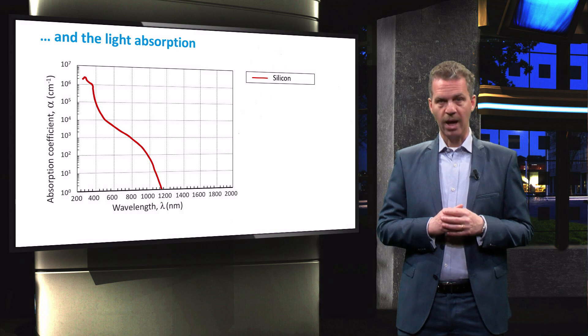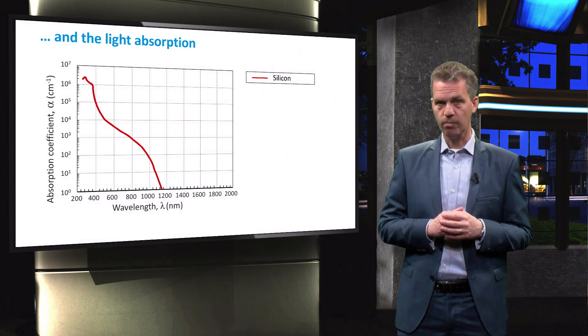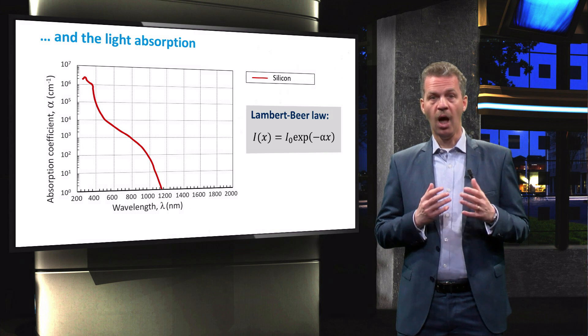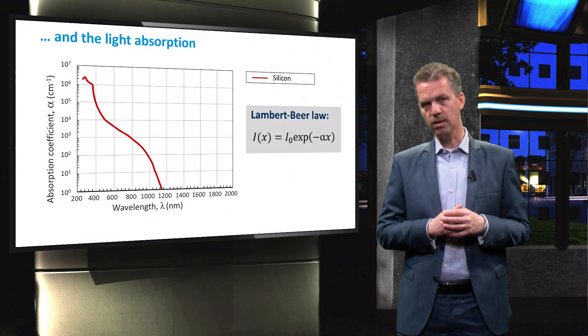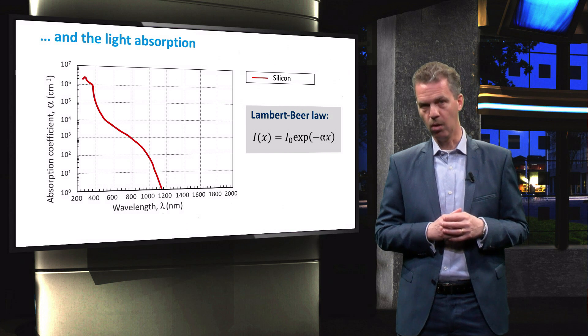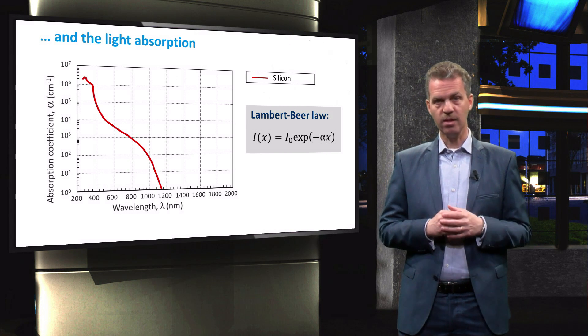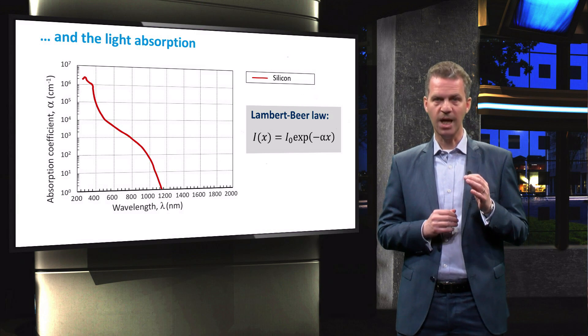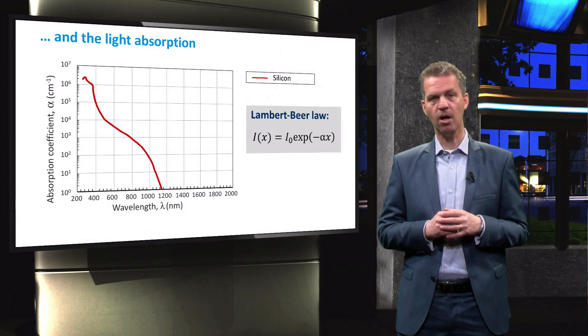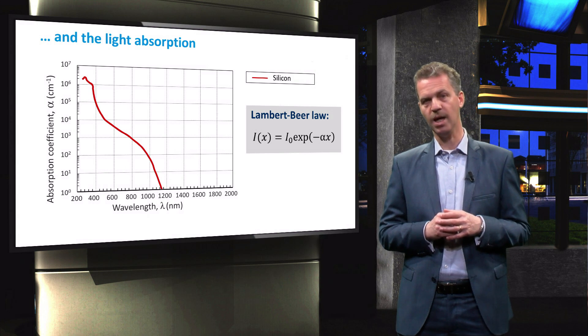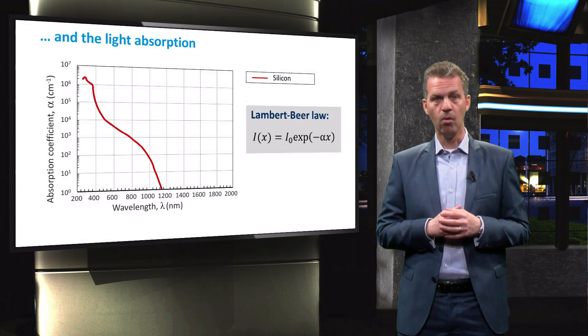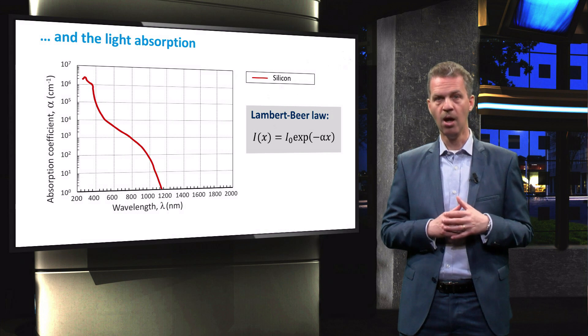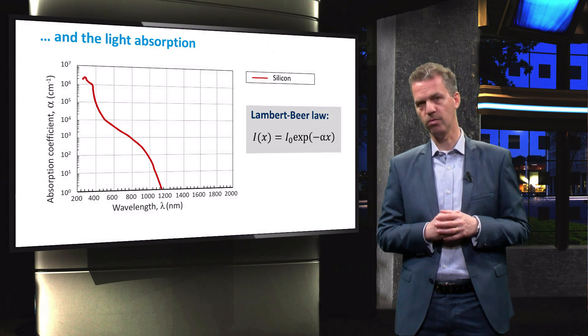The indirect band gap of silicon thus has a consequence for the absorption coefficient of this material as displayed in this slide. The attenuation of light in a material is described by the Lambert-Beer law. It relates the intensity of light at a distance x from the surface of the material to the incident intensity I0 for a given absorption coefficient alpha. A low absorption coefficient requires more material, i.e. a thicker layer, to absorb a larger fraction of the incident photons.